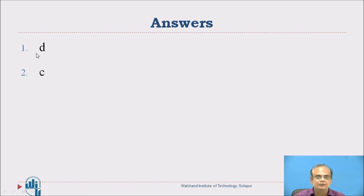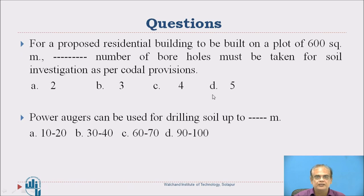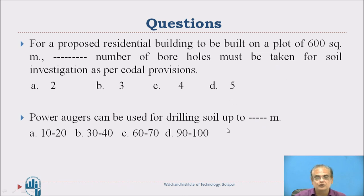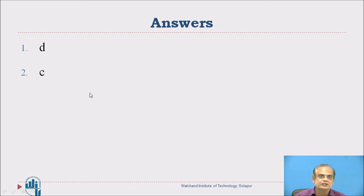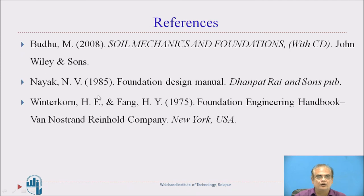Here are the answers. For the first question, D is the correct option — 5 boreholes must be taken for a plot of 600 square meters. For the second question, power augers can be used for drilling up to 60 to 70 meters, so C is the correct option.